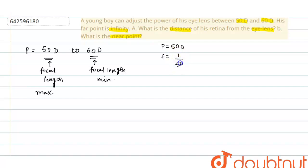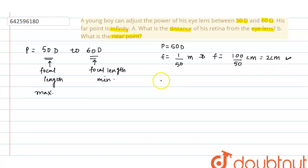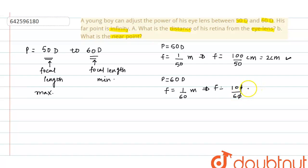When power is 50 diopter, focal length equals 1/50 meter, that is 100/50 centimeter, which is 2 centimeter. In this case, as the focal length is maximum, the eye is fully relaxed. When the power is 60 diopter, the focal length is 1/60 meter, which equals 100/60 centimeter, giving focal length as 10/6 centimeter.